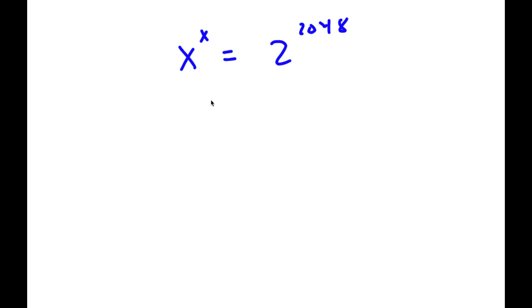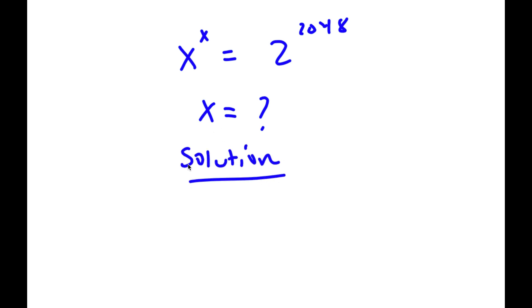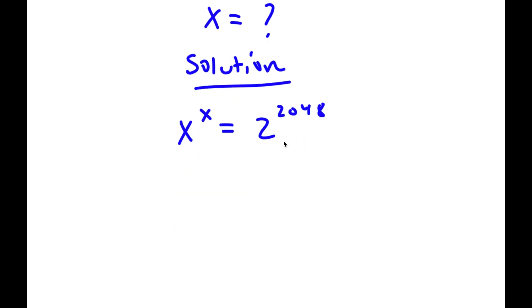In this problem, I have x to the power of x equals 2 to the power of 2048, and I want to find the value of x. I start with x to the power of x equals 2 to the power of 2048. I'm going to rewrite 2048 as 2 to the power of 11, so now I have x to the power of x equals 2 to the power of 2 to the power of 11.